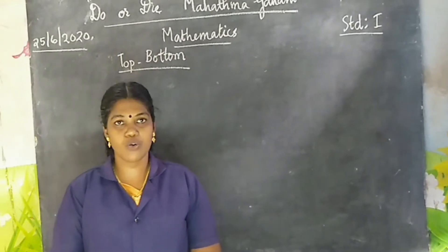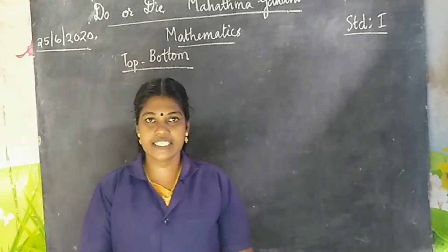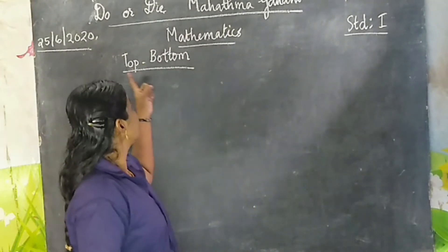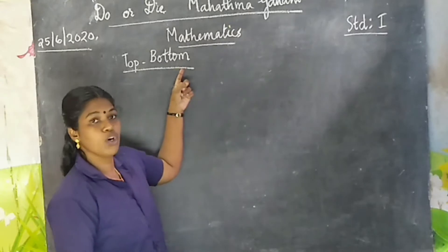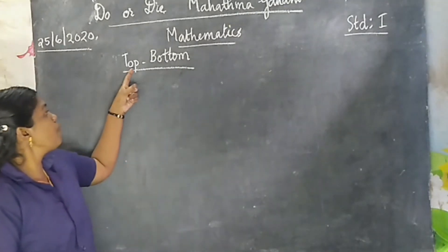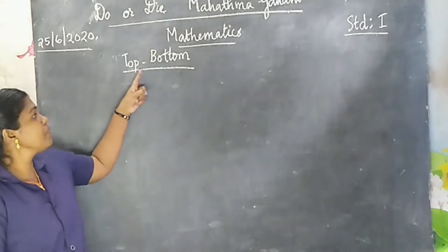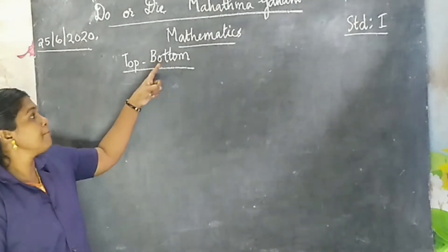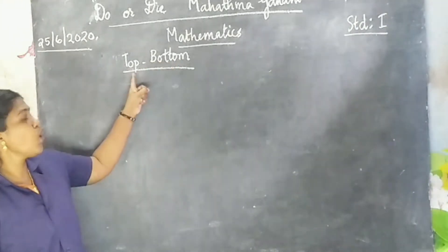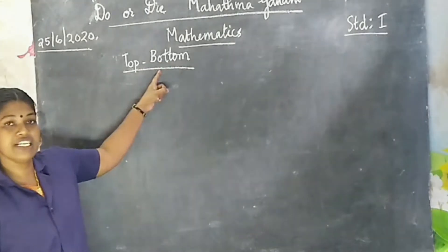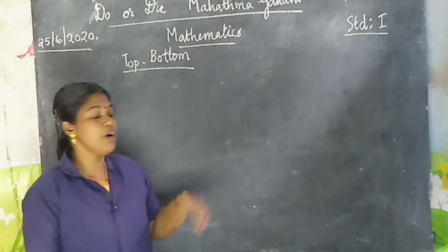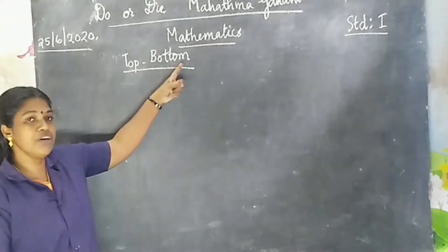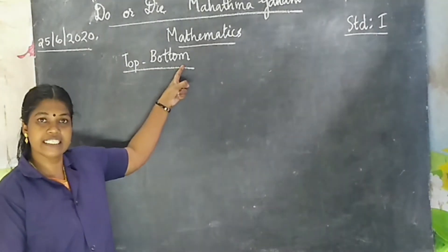We also studied inside and outside. Today we go to the next topic: top and bottom. What is top and what is bottom? Top means mughalil. Bottom means tad.